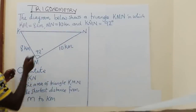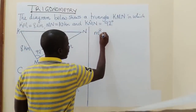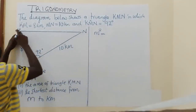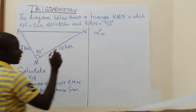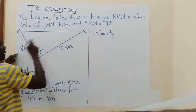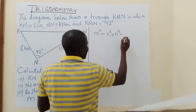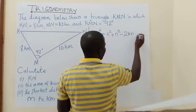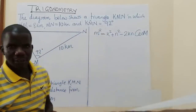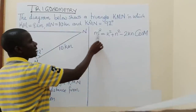The side KN, when we want to use letters, is represented by the small letter M. So small letter M squared is equal to the side opposite to the angle at K, represented by small letter K squared, plus the side opposite to the angle at N, represented by small letter N squared, minus 2KN cos M. This is what the cosine rule states, and we are using the letters that are given here.